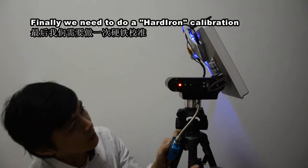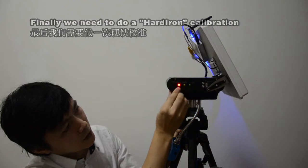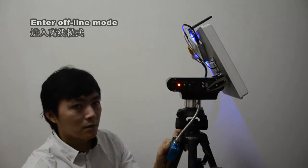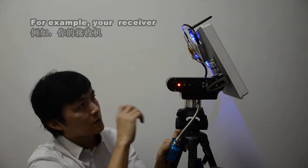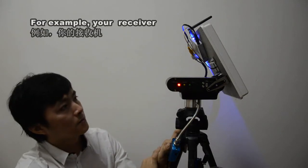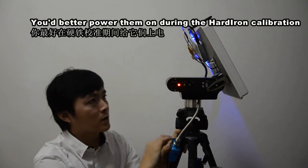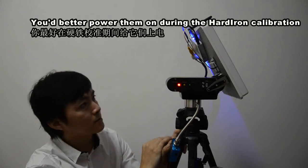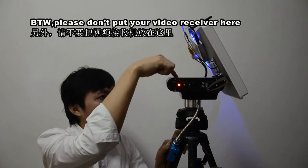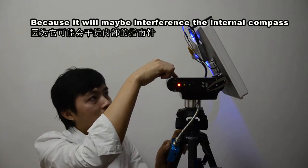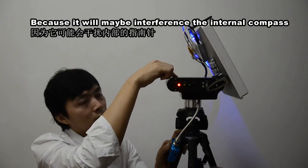Finally, we need to do a hard-iron calibration in the offline mode. If you have some electric devices on the tracker, for example, your receiver, you'd better power them on during the hard-iron calibration. By the way, please don't put your video receiver here because it will maybe interfere with the internal compass.